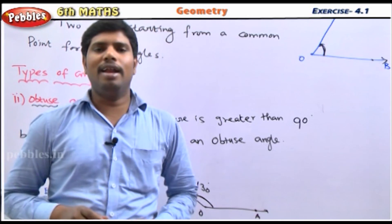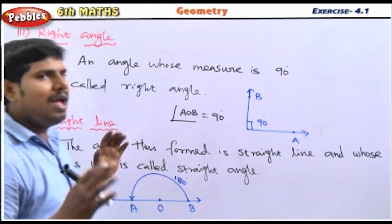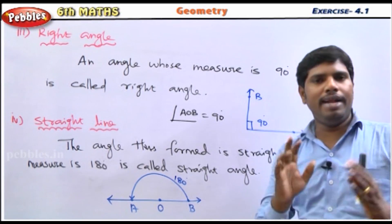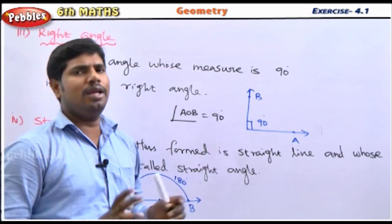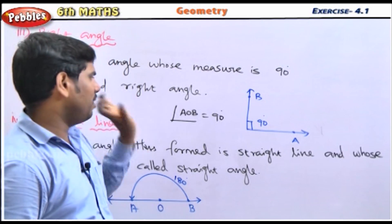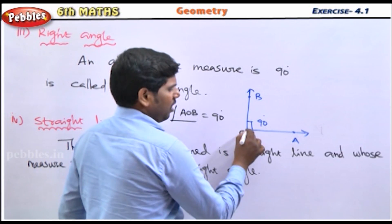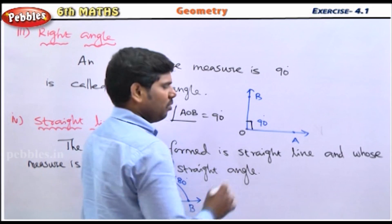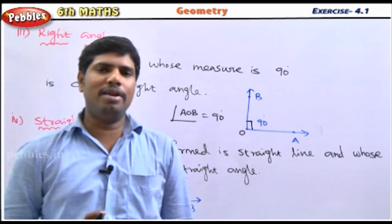Now we will see the right angle. The angle whose measure is exactly 90 degrees is called a right angle. It is formed as a perpendicular line segment. Angle AOB is equal to 90 degrees — if you measure exactly 90 degrees, it is called a right angle.